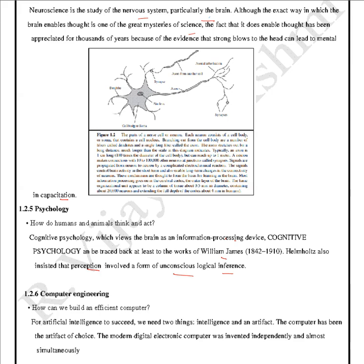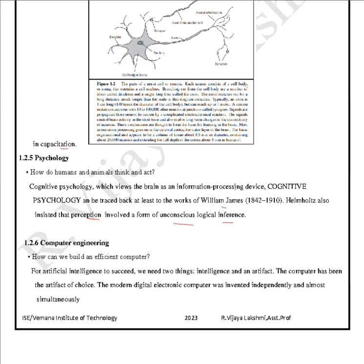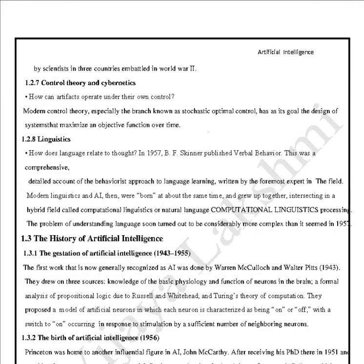Next is computer engineering — how can we build an efficient computer? For artificial intelligence to succeed, we need two things: intelligence and artifact. The computer has been the artifact of choice. The modern digital electronic computer was invented independently and almost simultaneously by scientists in three countries during World War II.